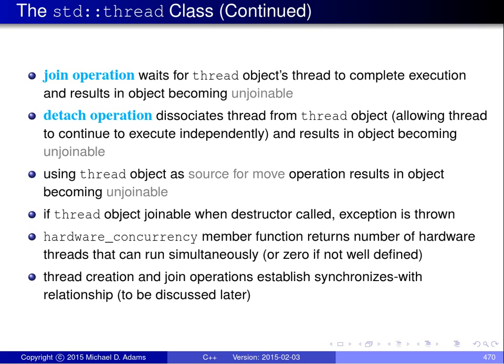Thread objects are movable, and if you perform a move operation on a Thread, the Thread object used as the source becomes marked unjoinable. An important point is that at the time the destructor of a Thread object is called, the Thread must not be joinable — there cannot be a thread of execution associated with it. If you try to destroy a Thread object that's still joinable, the standard library will throw an exception, indicating a probable programming error.